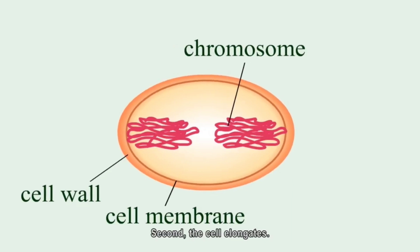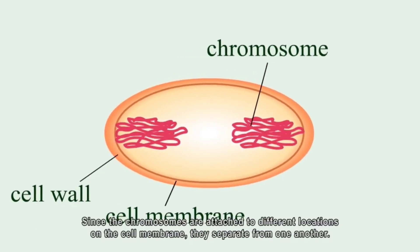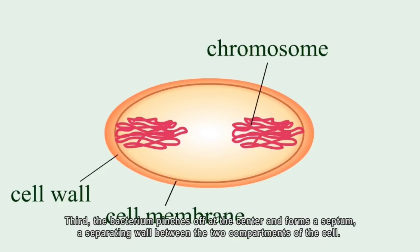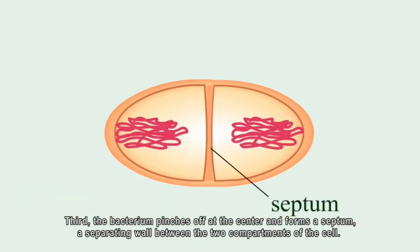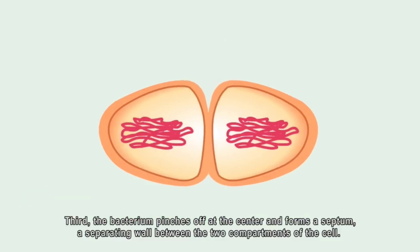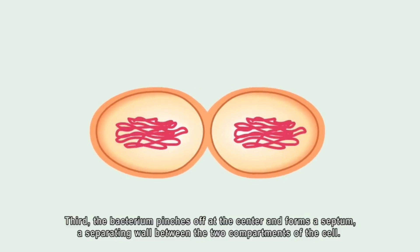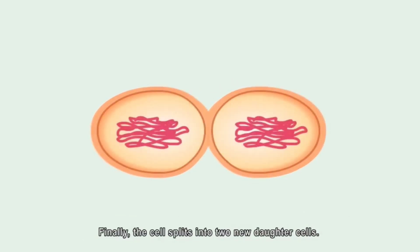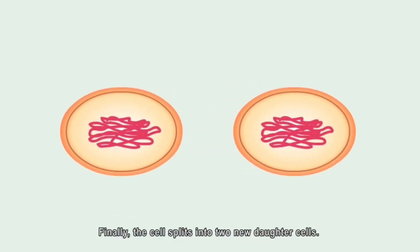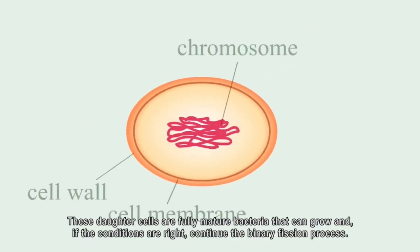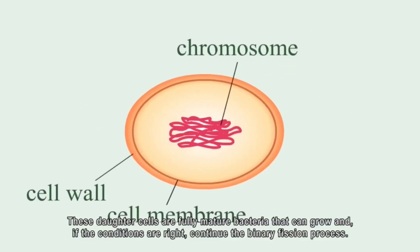In the second step, the cell elongates, and since the chromosomes are attached to different locations on the cell membrane, they separate from one another. Third, the bacterium pinches off at the center and forms a septum, a separating wall between the two compartments of the cell. Finally, the cell splits into two new daughter cells — fully mature bacteria that can grow and, if conditions are right, continue the binary fission process.